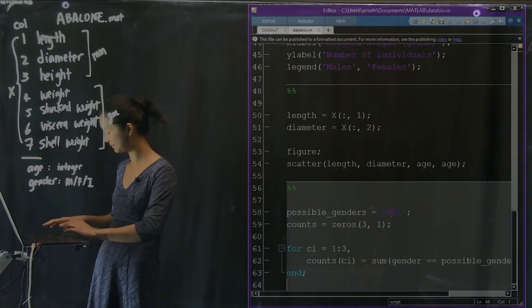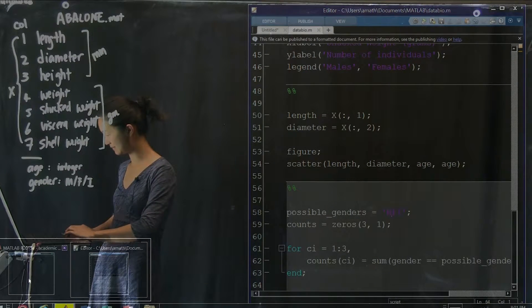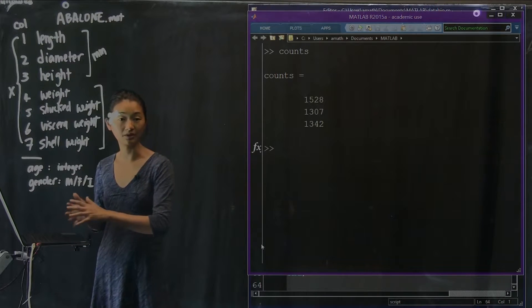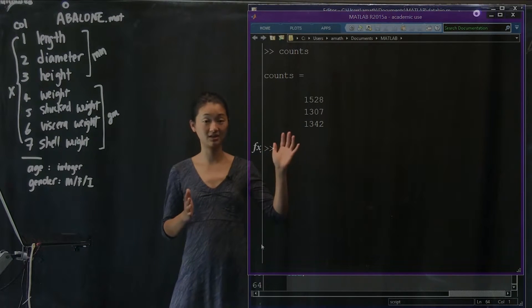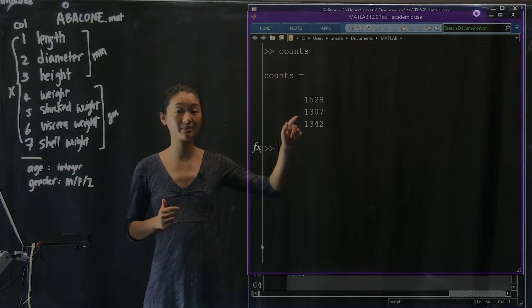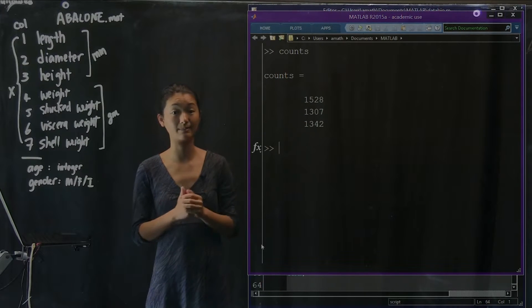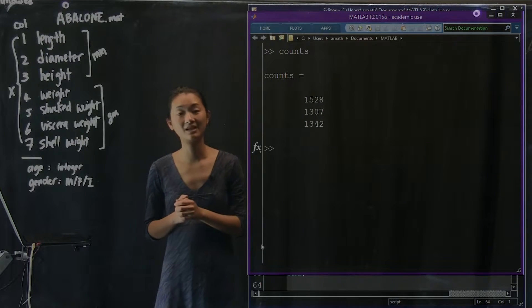I've just run that code and if we go back to the command line and look at the number of counts, here is what's inside counts. So here are the three elements of counts that correspond to number of m's, number of f's, and number of i's in my data set. So that's great.